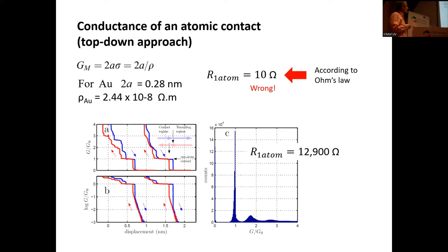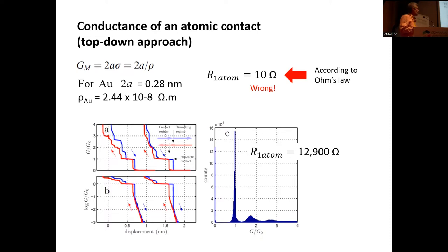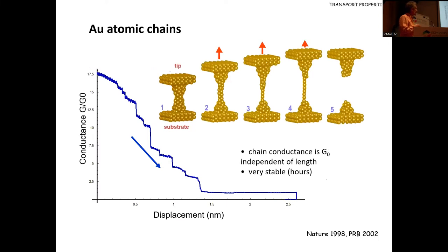To show that Ohm's law is completely wrong here: if you have just one atom between two electrodes and use Ohm's law to calculate its resistance using the resistivity of gold, you would get about 10 ohms. But if you do the measurement, what you see is 1000 times larger. Similarly, if you have an atomic chain of gold, the conductance remains constant — something very strange from a macroscopic resistivity perspective.